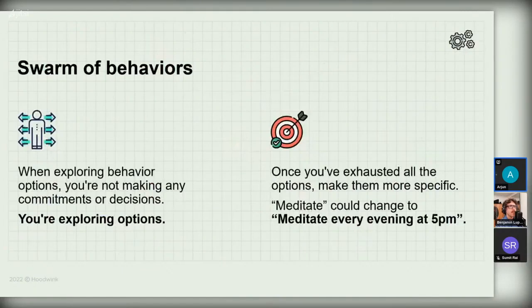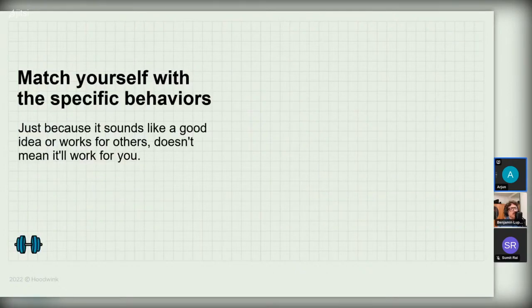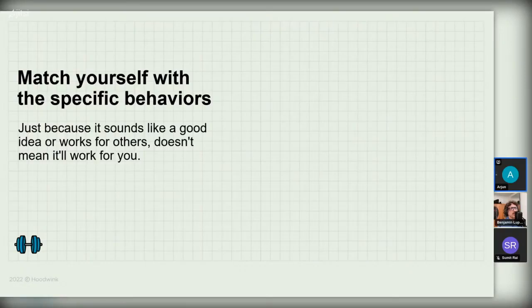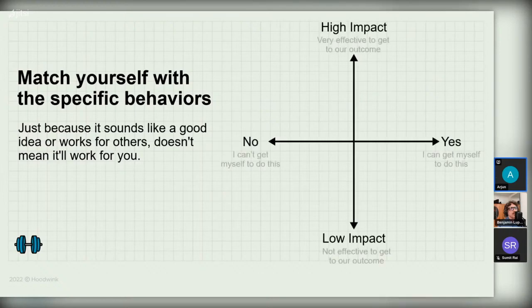When exploring behavior options, you're not making commitments — you're just exploring. Once you've exhausted all options, make them more specific: 'meditate' could change to 'meditate every evening at 5 PM.' Once we have all the various options listed, we want to match these behaviors to ourselves by plotting them on a quadrant. On the X-axis: high-impact behaviors (very effective for the desired outcome — in this case, reducing stress) versus low-impact behaviors. On the Y-axis: behaviors I can't get myself to do on the left, and behaviors I can realistically get myself to do on the right.